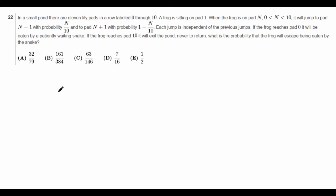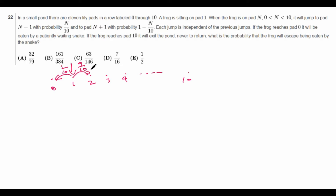In a small pond there are 11 lily pads labeled 0 through 10. A frog is sitting on lily pad number 1. When the frog is on pad number n, it will jump to pad n-1 with probability n over 10, and it will jump to pad n+1 with probability 1 minus n over 10. So from pad 1, it's 1 tenth to the left and 9 tenths to the right. For pad 2, it's 2 tenths left and 8 tenths right. For pad 3, it's 3 tenths and 7 tenths, and so on. If the frog reaches pad 0, it's eaten by a snake. If the frog reaches pad 10, it escapes. We want to find the probability that the frog eventually escapes.